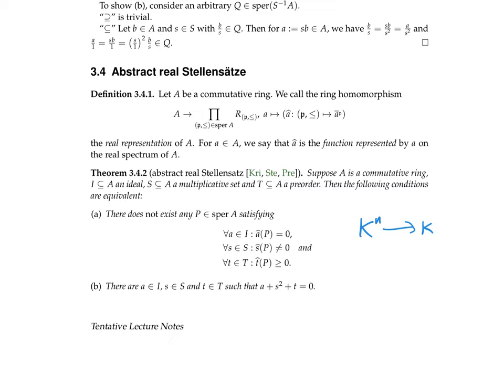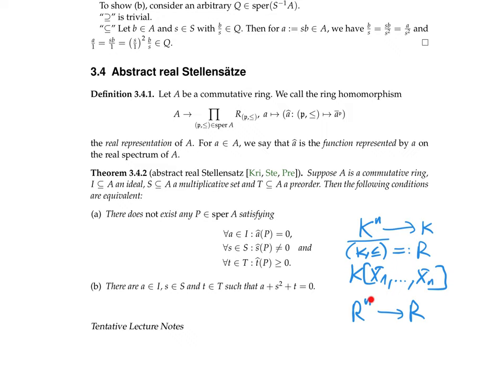We will do it slightly differently: we fix an order on k, take the polynomial ring of k in n variables, and then look at the real closure r of this ordered field, viewing the polynomials as functions from r^n to r. We go to the real closure because non-existence of a point in k^n is probably not enough to give such a certificate, but non-existence in r^n is stronger and will be enough.